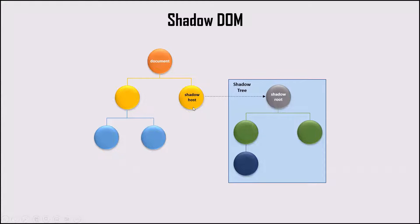Now using this Shadow DOM, the code inside this tree cannot be affected by anything outside it, which basically allows the implementation of the concept of encapsulation. So this is about the Shadow DOM element and why Shadow DOMs are being used. But the question is: how do we identify elements using Selenium which are under the Shadow DOM tree? Let's see how we can work with Selenium to identify these Shadow DOM elements.